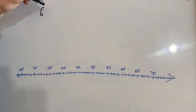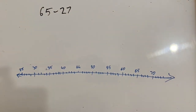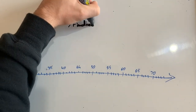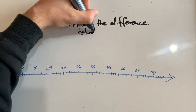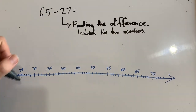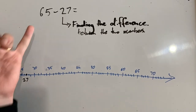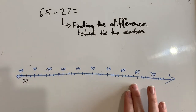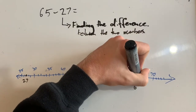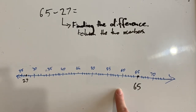Let's try 65 minus 27. Now I could use any number of strategies to solve this one, but for today we're going to use subtraction by adding — finding how much is in between those numbers. So I want to know the difference between these two. I'm going to start on 27, the smaller number, and mark 65 here so I don't forget it. I want to know how much is in this gap — what the difference is.